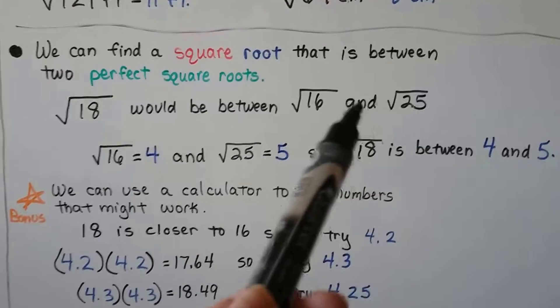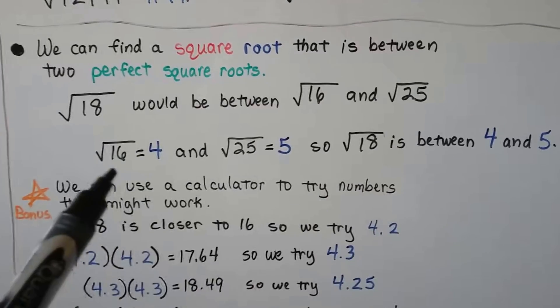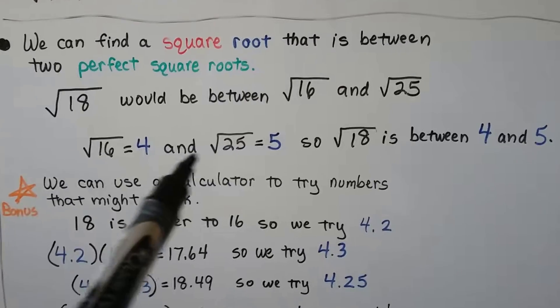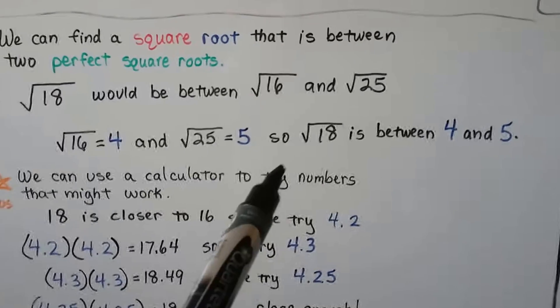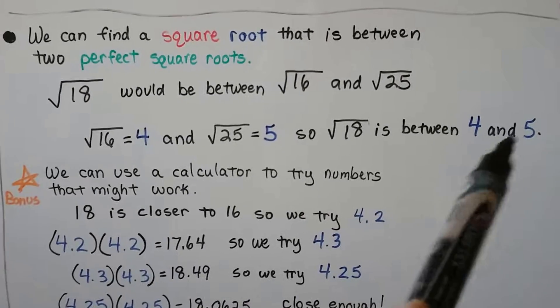18 is in between 16 and 25. The square root of 16 is a 4. And the square root of 25 is a 5. So, we'll know, because the 18 is in between them, that the square root of 18 is between 4 and 5.